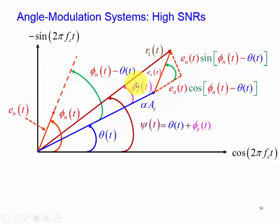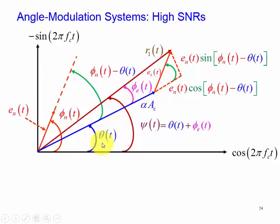Here phi_e is the error angle introduced by the noise. Our actual angle is theta(t), but since it's corrupted by noise we have this additional noise angle added to theta(t), giving us psi(t) for our resultant vector. So the angle of our resultant vector psi(t) consists of two parts: the signal angle plus the noise angle.